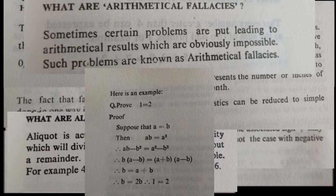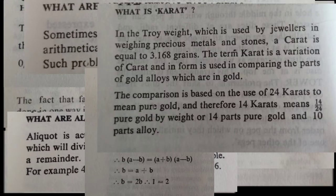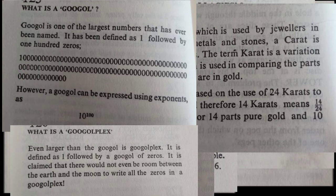What is arithmetic fallacy? This is what most of the time you do when you prove something like 1 equal to 2 which is false. Then what is the caret which we use. Then she also gives the largest numbers of googol and googolplex.